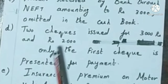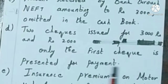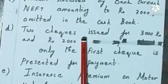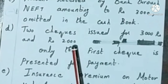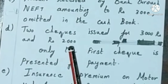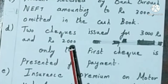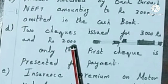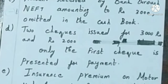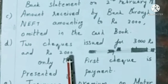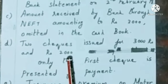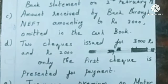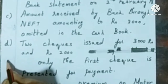Two checks issued for Rs. 3000 and Rs. 2000. The first check is presented for payment, so it causes no difference. But the second check of Rs. 2000 is not presented for payment, which causes a difference between passbook and cashbook balances. As soon as we issue checks, we record them in the cashbook, so the cashbook balance is decreasing. We have to reduce Rs. 2000.